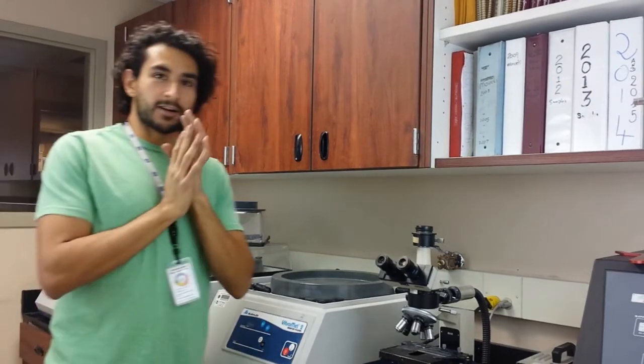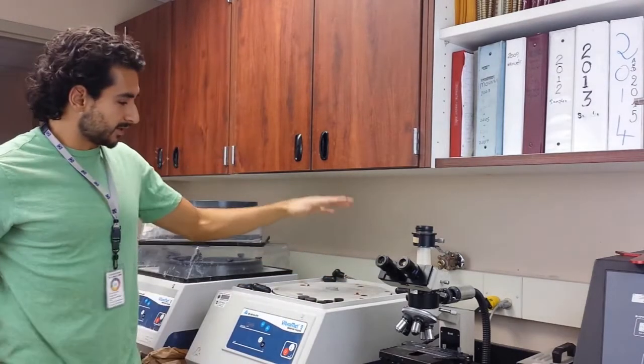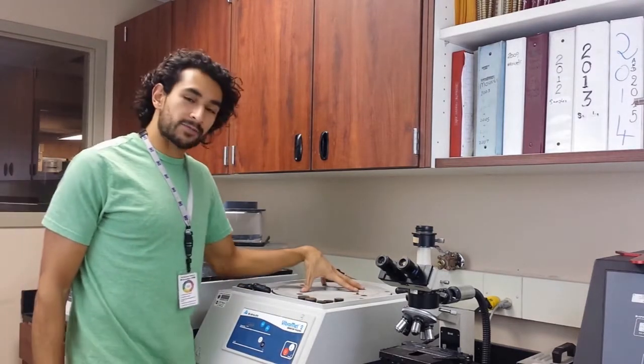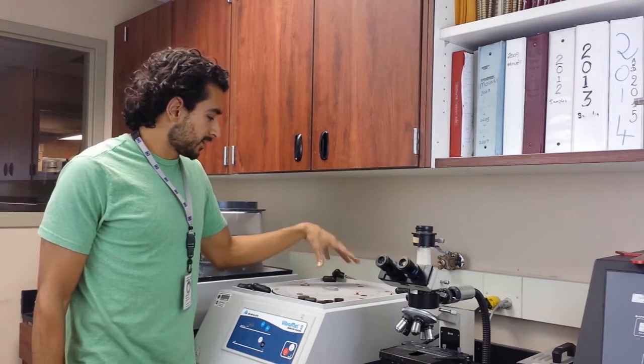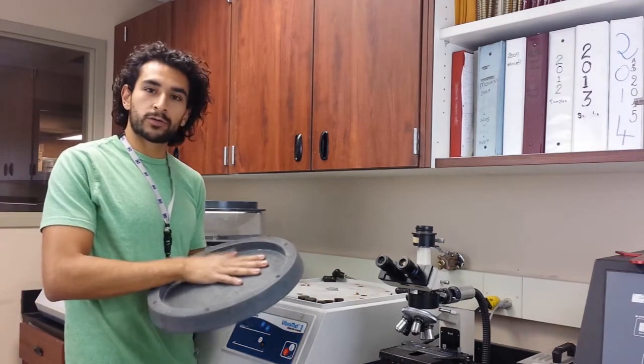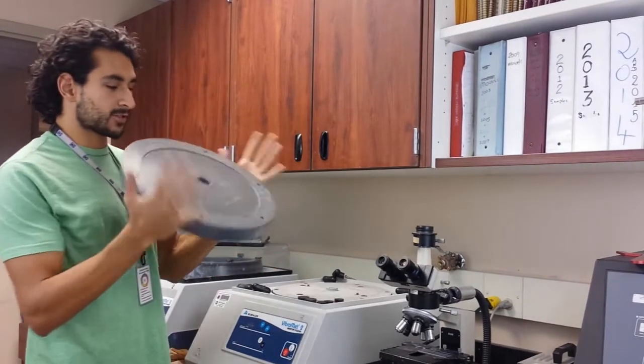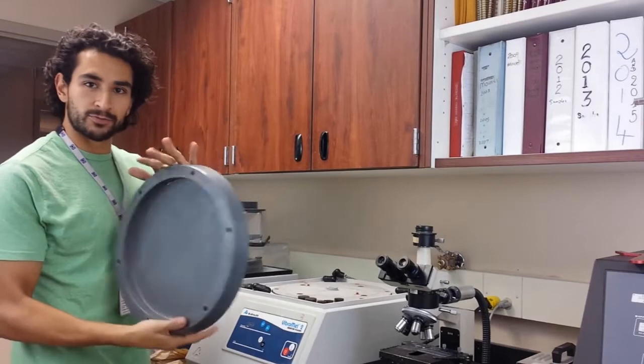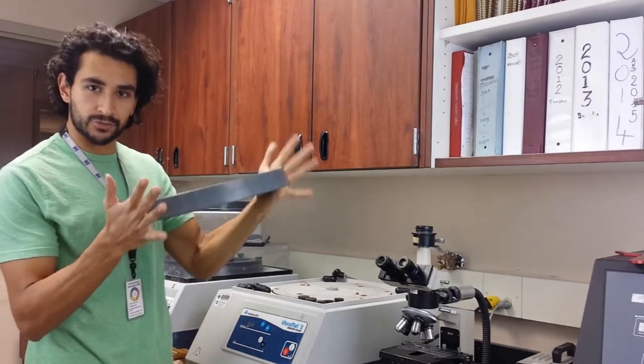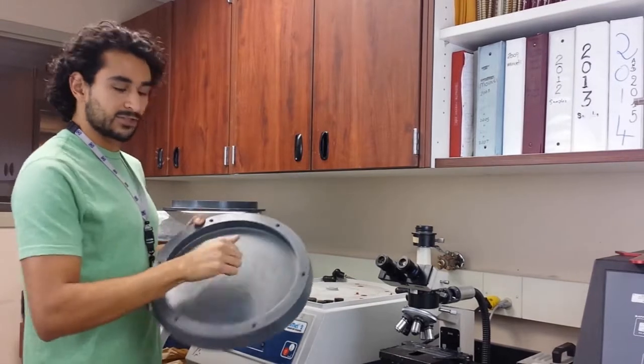Okay, alright, so this is the Vibramet, this right here. This machine vibrates for a long time and as your sample sits inside this bowl, it gets polished. The first thing you need to know is that this bowl is removable and you can wash it. You should wash it every time you use it. And right now it's just a plastic bowl.